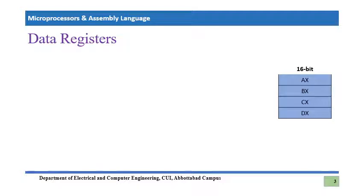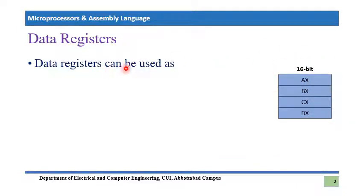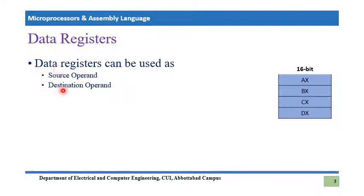Now let's proceed to some important characteristics — specifically the types of information that can be stored in these data registers. A data register can be used as a storage place for two different types of information, known as source operand and destination operand. This is quite an interesting concept — what is source and what is destination?